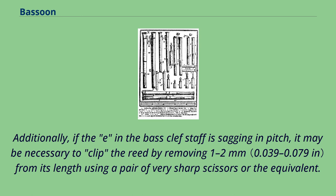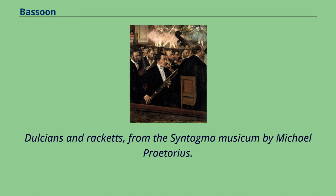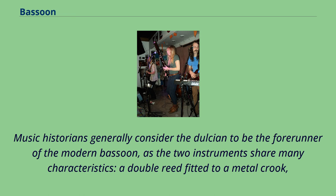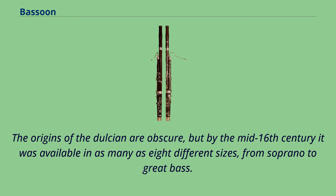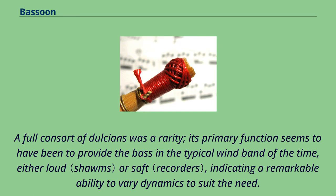Music historians generally consider the Dulcian to be the forerunner of the modern bassoon, as the two instruments share many characteristics: a double reed fitted to a metal crook, obliquely drilled tone holes, and a conical bore that doubles back on itself. The origins of the Dulcian are obscure, but by the mid-16th century it was available in as many as eight different sizes, from soprano to great bass. A full consort of Dulcians was a rarity; its primary function seems to have been to provide the bass in the typical wind band of the time, either loud or soft, indicating a remarkable ability to vary dynamics.